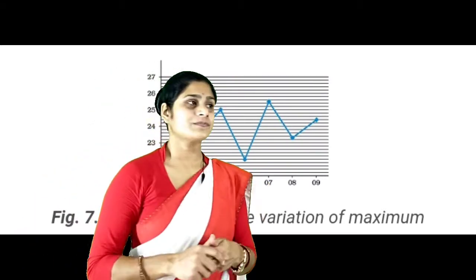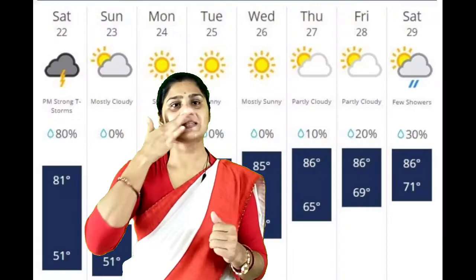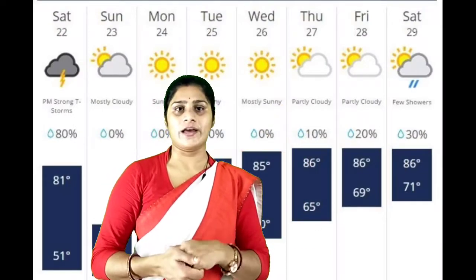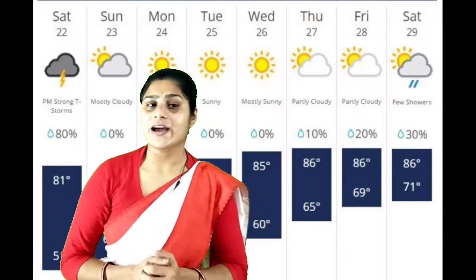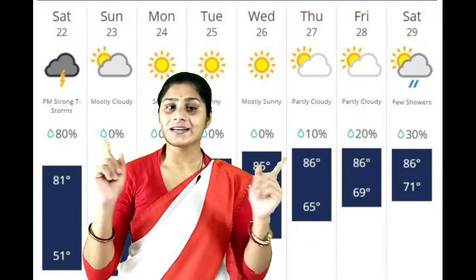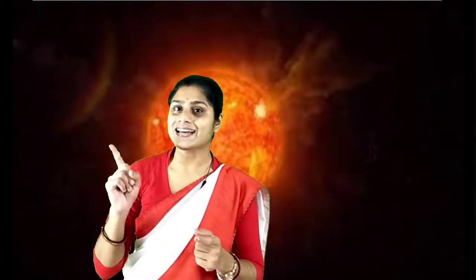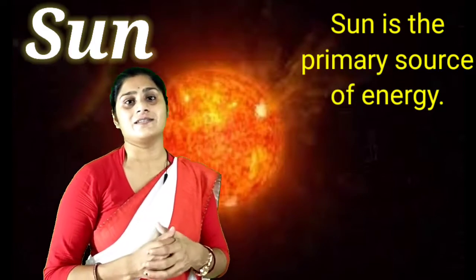Now, one thing comes to mind: how much difference is there between maximum and minimum temperature? What is the biggest reason behind it? All changes in weather are caused by the sun. The rotation of Earth is also responsible, but the most important factor is the sun. Sun is the primary source of energy.